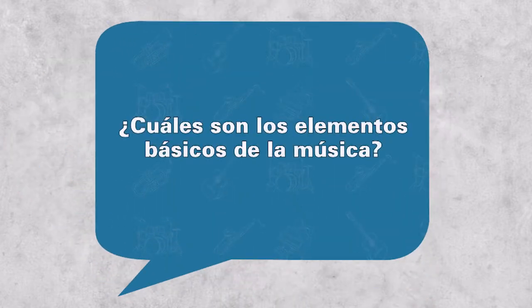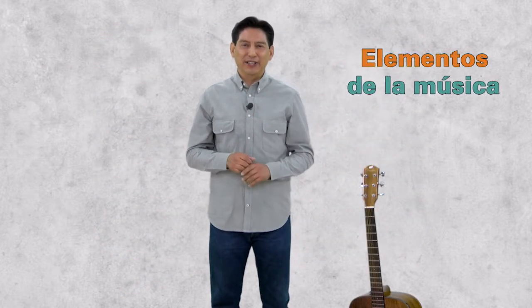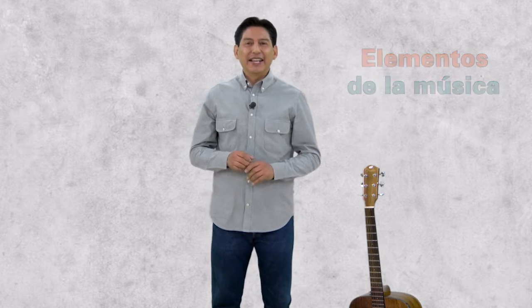¿Cuáles son los elementos básicos de la música? Para iniciar, haremos un repaso de los elementos de la música. El primero de ellos es el ritmo, que es la combinación de sonidos y silencios en un tiempo y secuencia determinada.